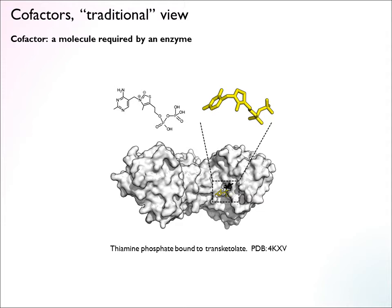An example is shown here: thiamine phosphate, which is a common cofactor in many enzymes in carbohydrate metabolism. This is a sensible definition, but it's not super useful for the way we want to think about cofactors to analyze metabolism.